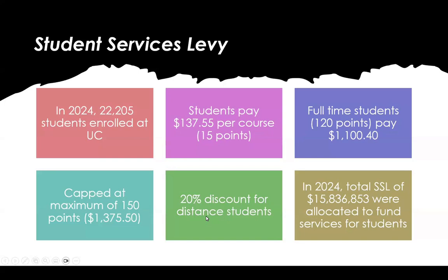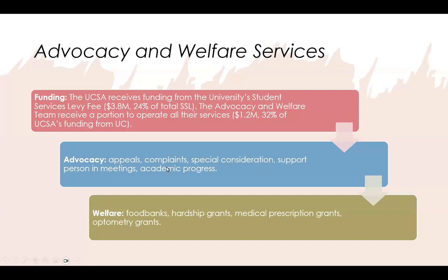Distance students get a 20% discount — students studying in Nelson or Blenheim or elsewhere online are not using as many resources, so the university recognizes that. In total, 15.8 million was collected from all enrolled students and dispersed across different services. UCSA as a whole receives 3.8 million, which is 24% of the total SSL, and our team receives 1.2 million — which is 32% of UCSA's funding.